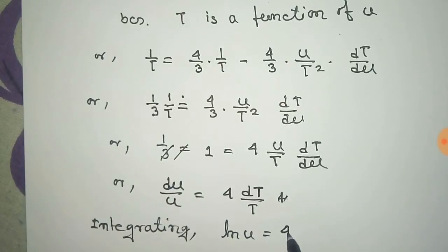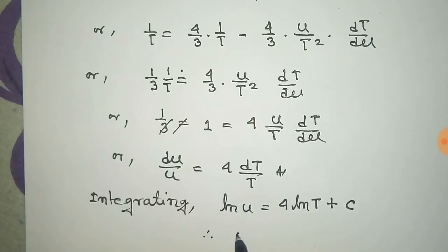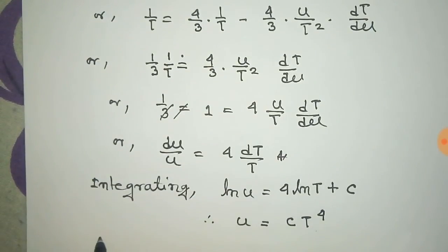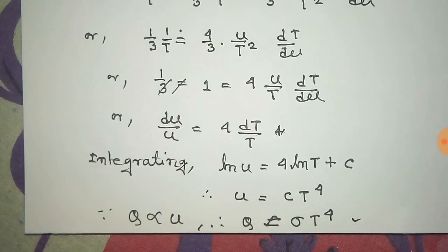We get ln u = 4 ln T + C, or u = C T⁴, where C is another constant. Since Q is proportional to u, we can write Q = σT⁴, where σ is another constant. This is called the Stefan-Boltzmann law.